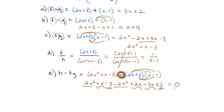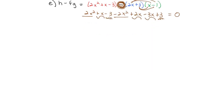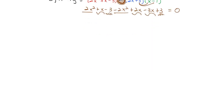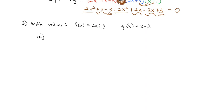So that's how we combine functions using function algebra — adding, subtracting, multiplying, or dividing them. Quite often, though, we won't do that as a function; instead we'll do the same idea but with specific values. Let's use f(x) = 2x + 3 and g(x) = x − 2, and find (f + g)(−4). That means we'll plug −4 into both functions and add the results. We need to find f(−4) first.